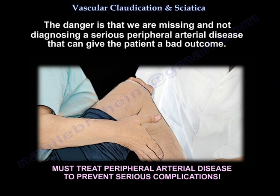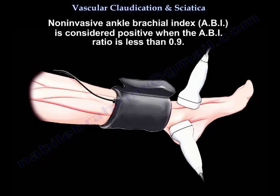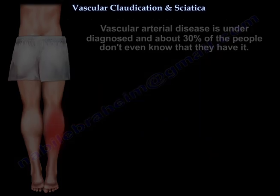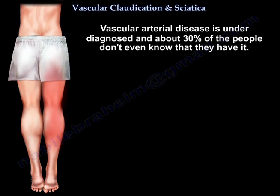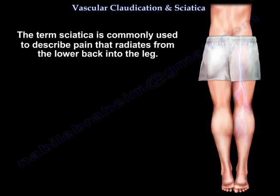The non-invasive ankle-brachial index (ABI) is considered positive when the ABI ratio is less than 0.9. Vascular arterial disease is underdiagnosed — about 30 percent of people don't even know they have it. It can cause limb-threatening ischemia.